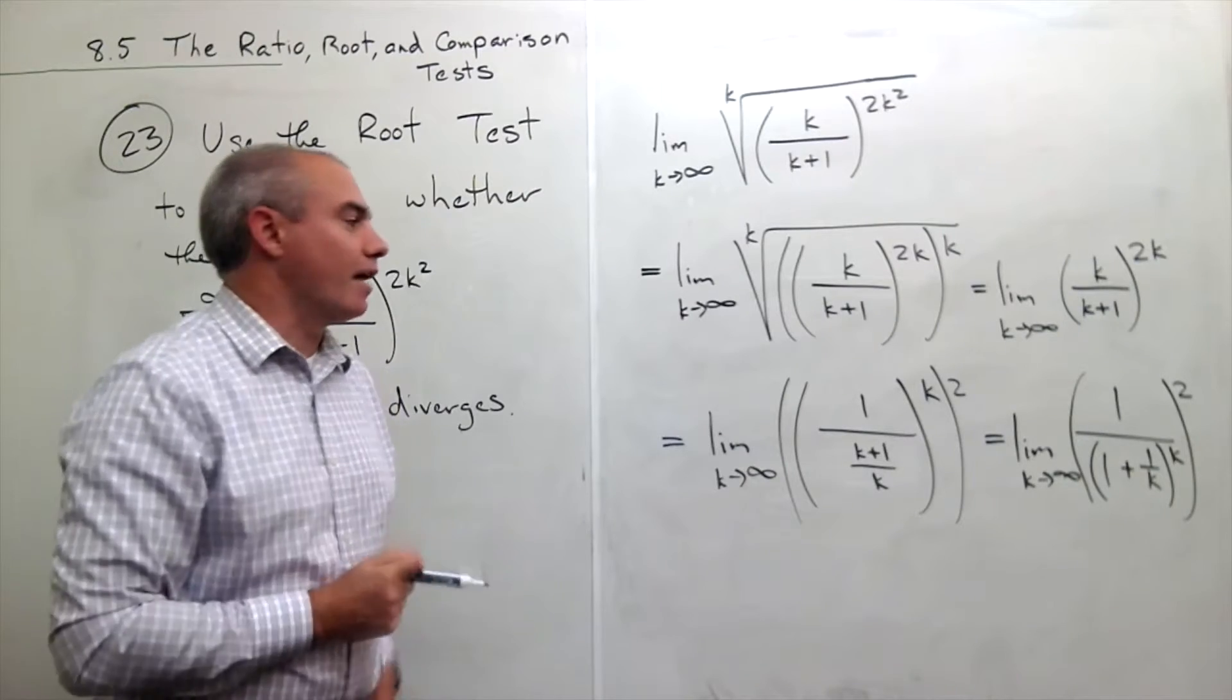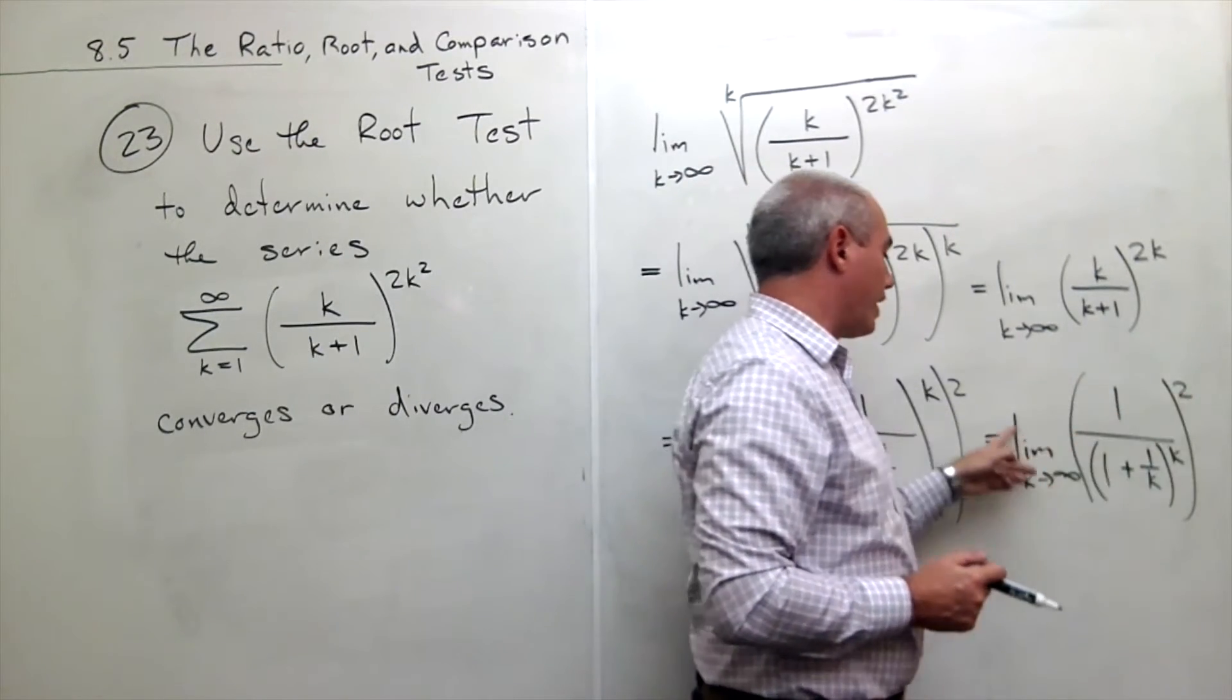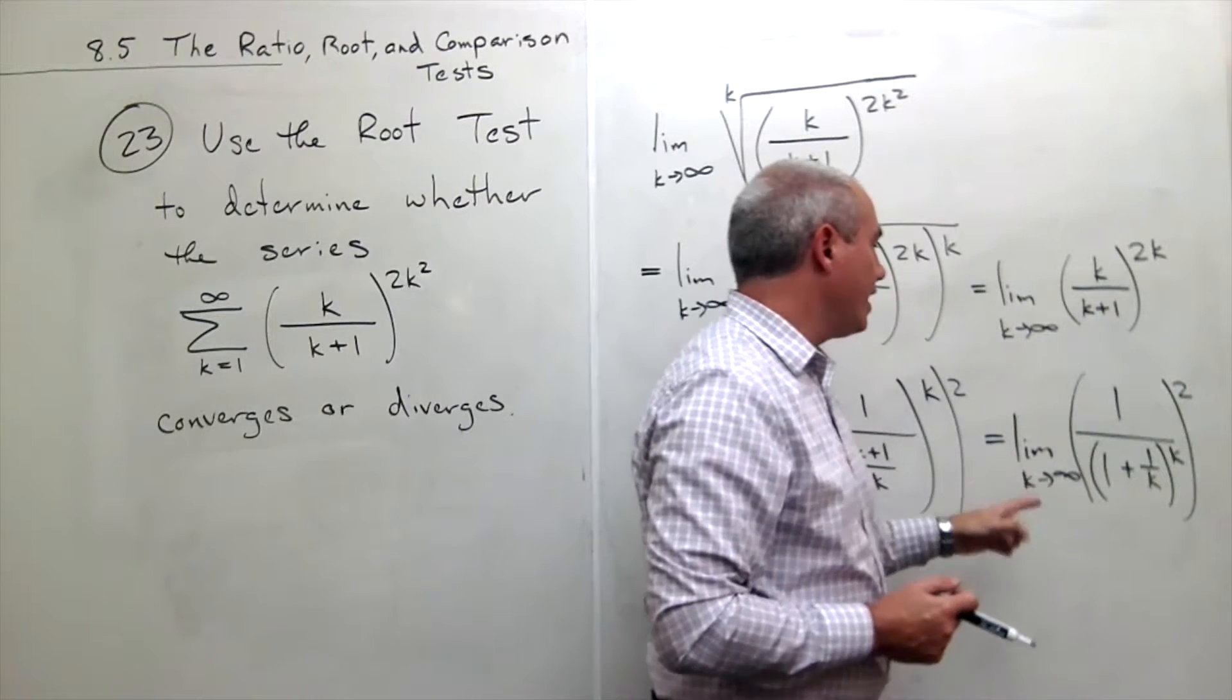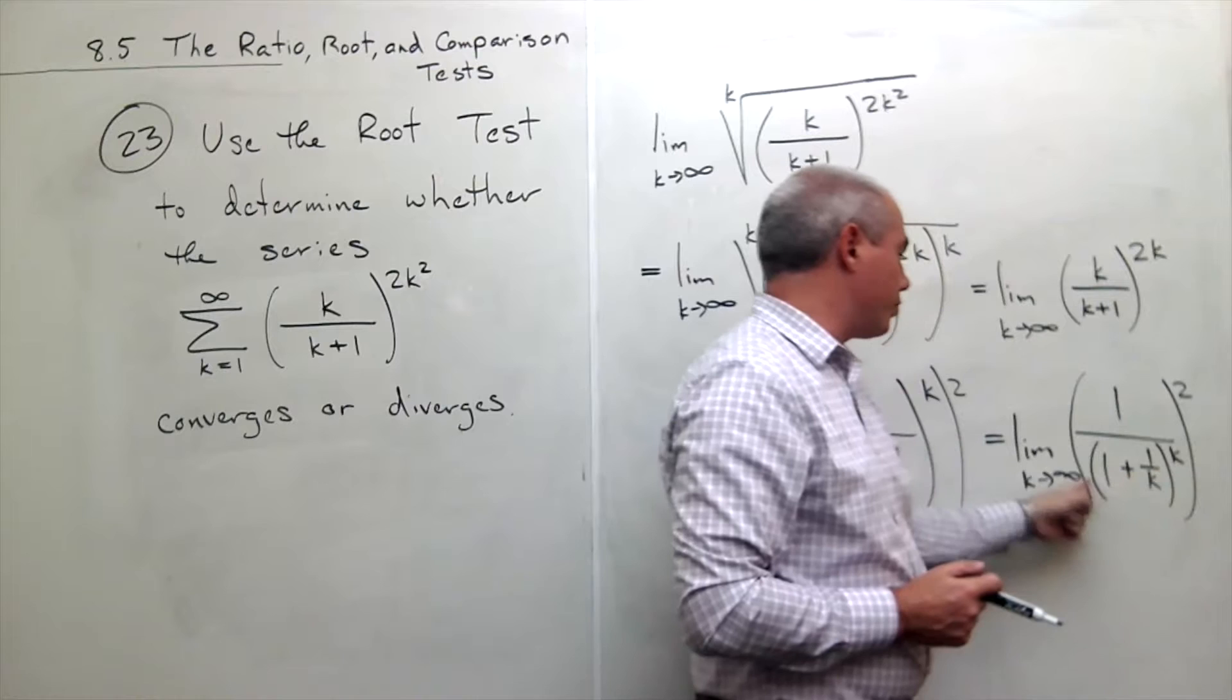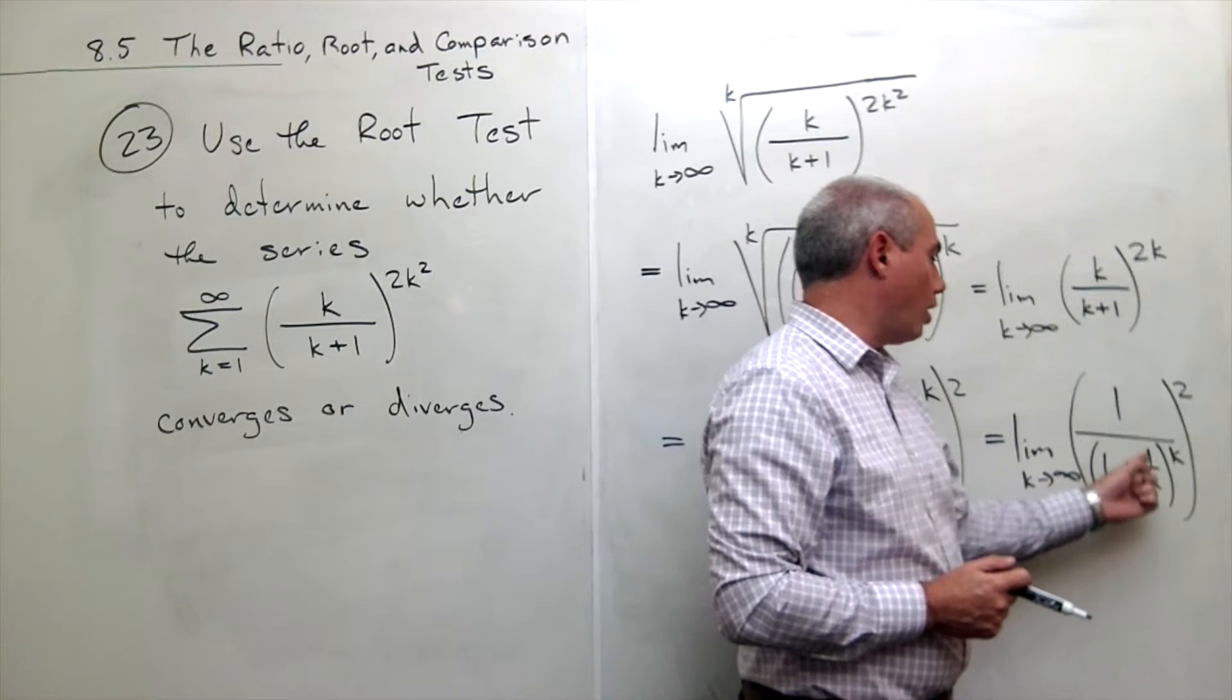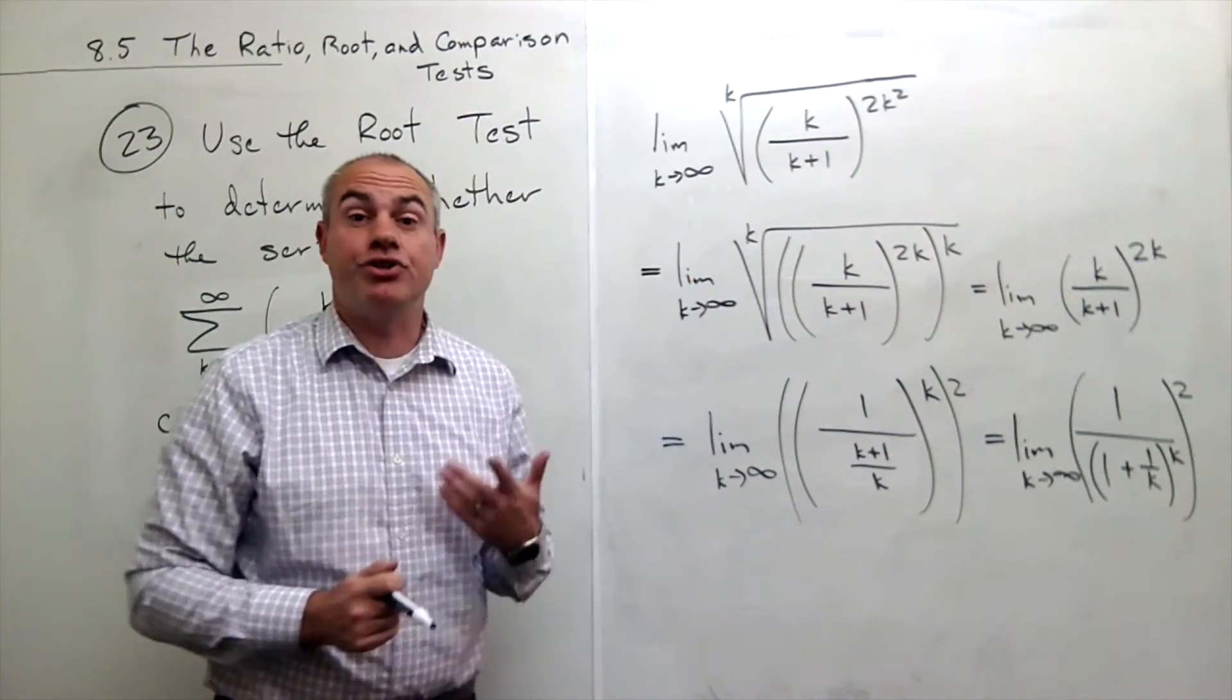Now, limits can move inside and out of squares, so I can kind of ignore the square in some sense and move the limit inside. And so really, the question is do I know the limit as k goes to infinity of 1 plus 1 over k to the k power? And we should know that limit.